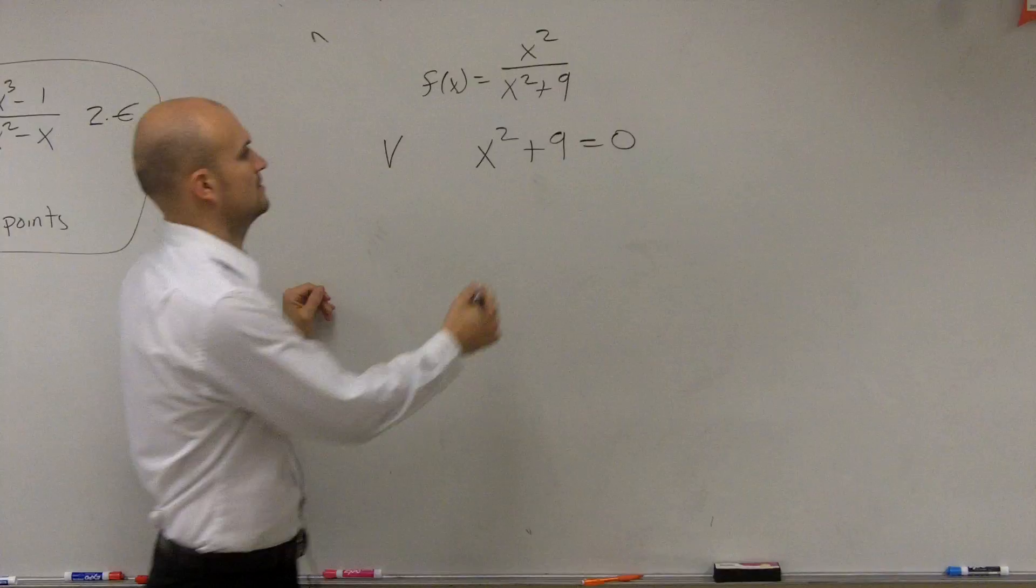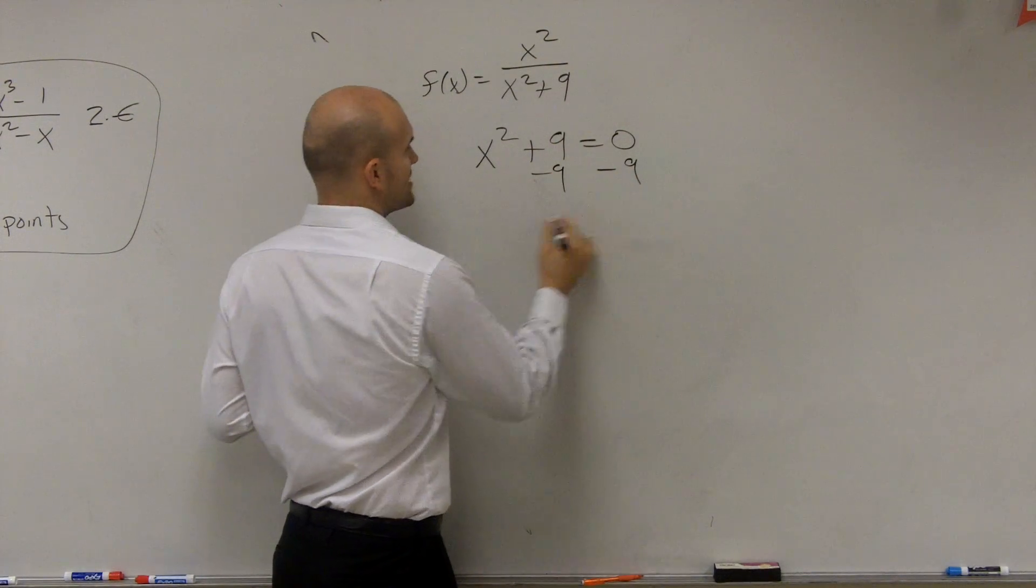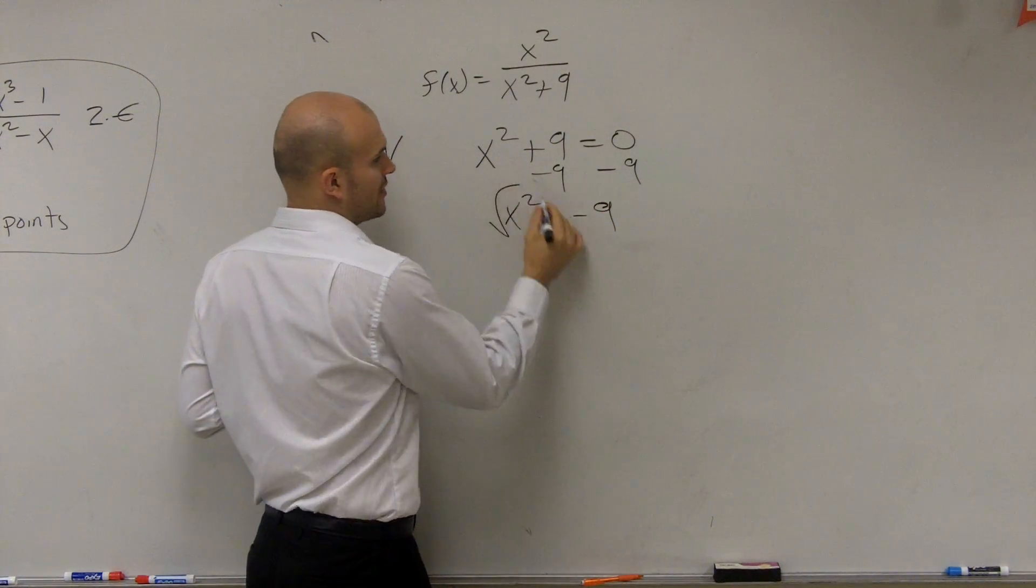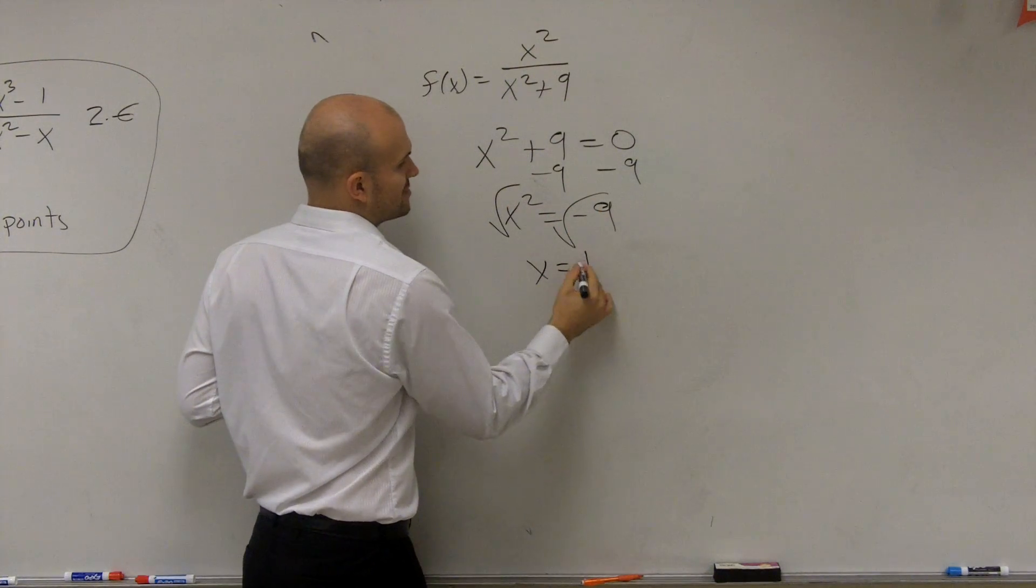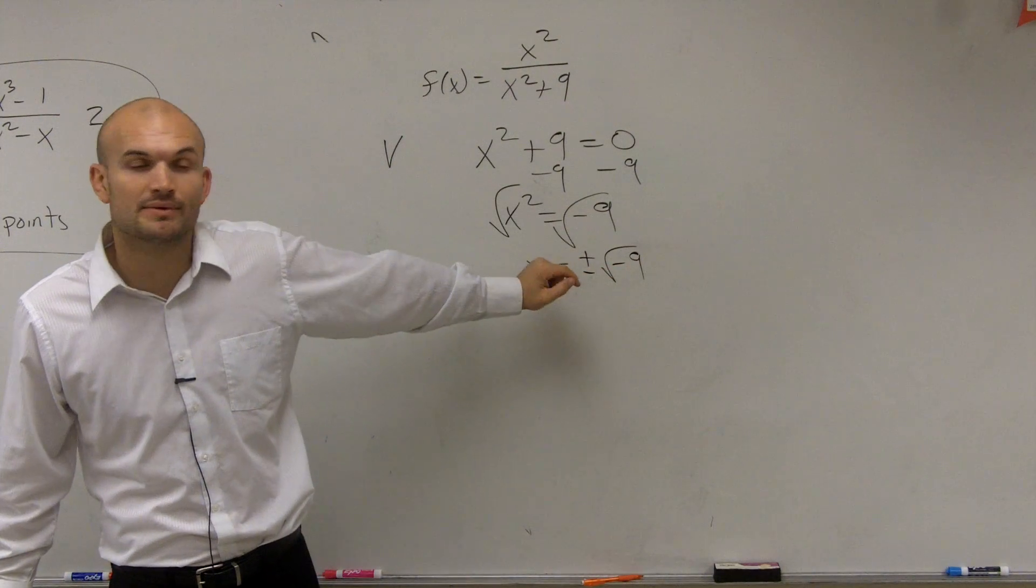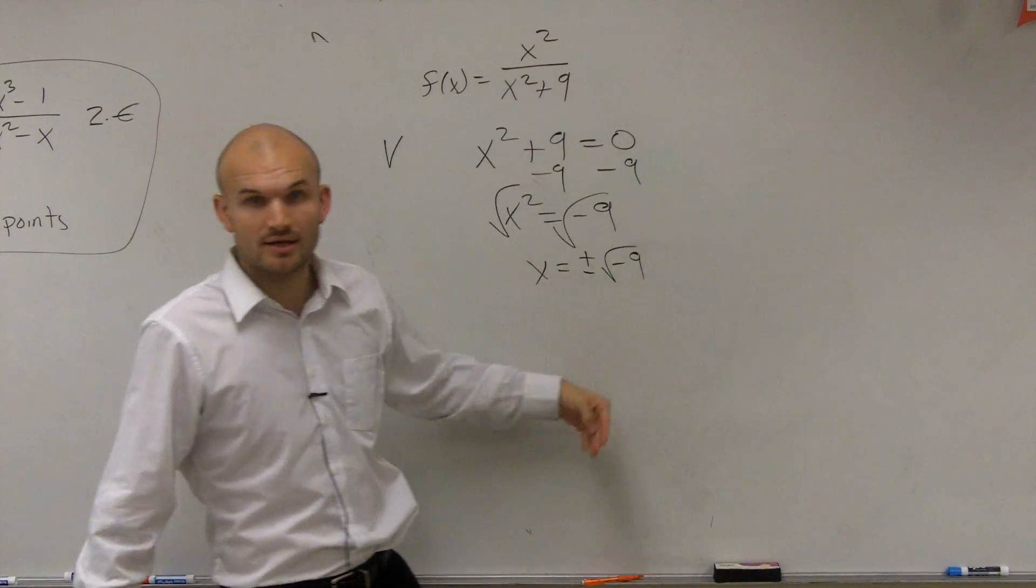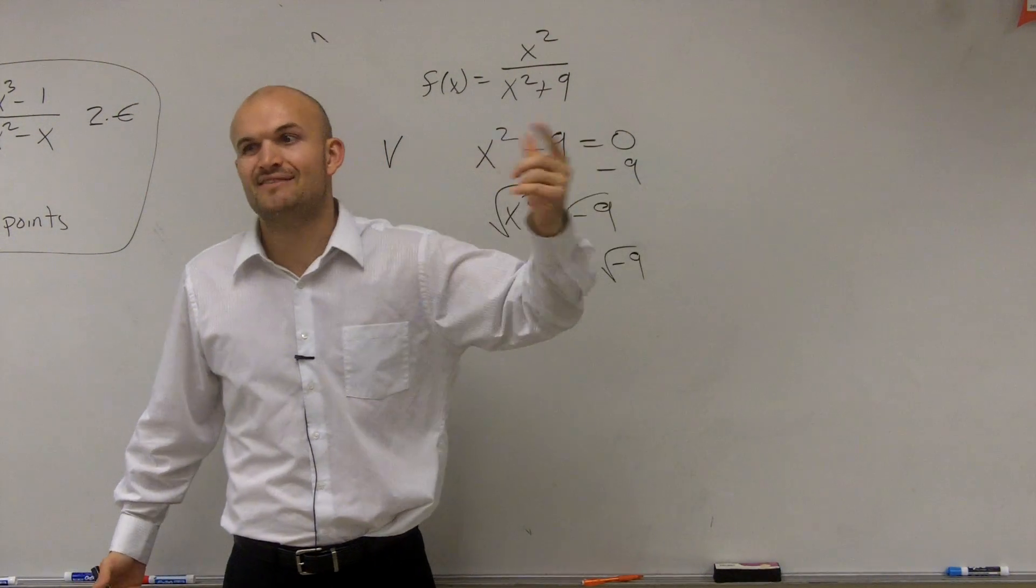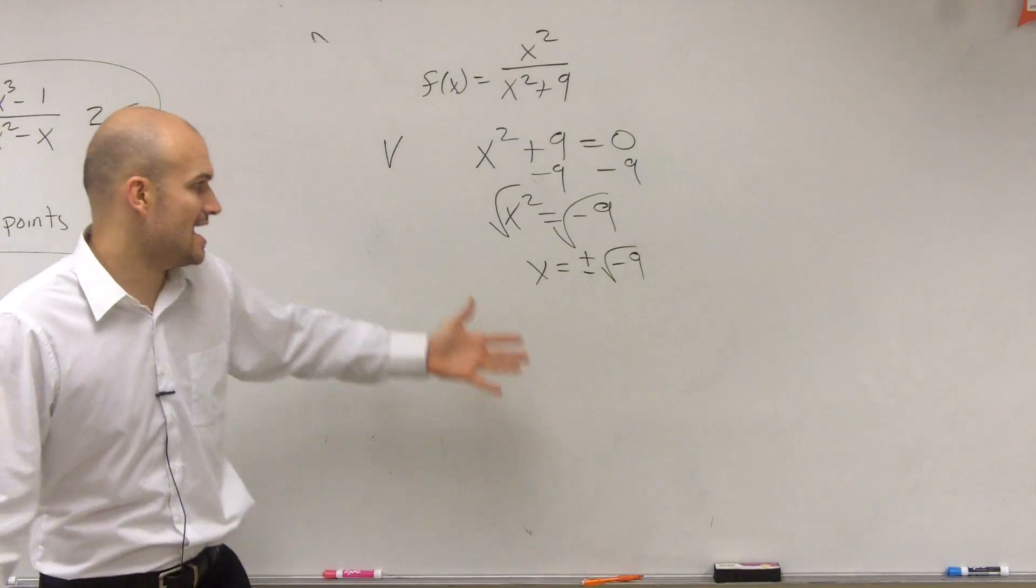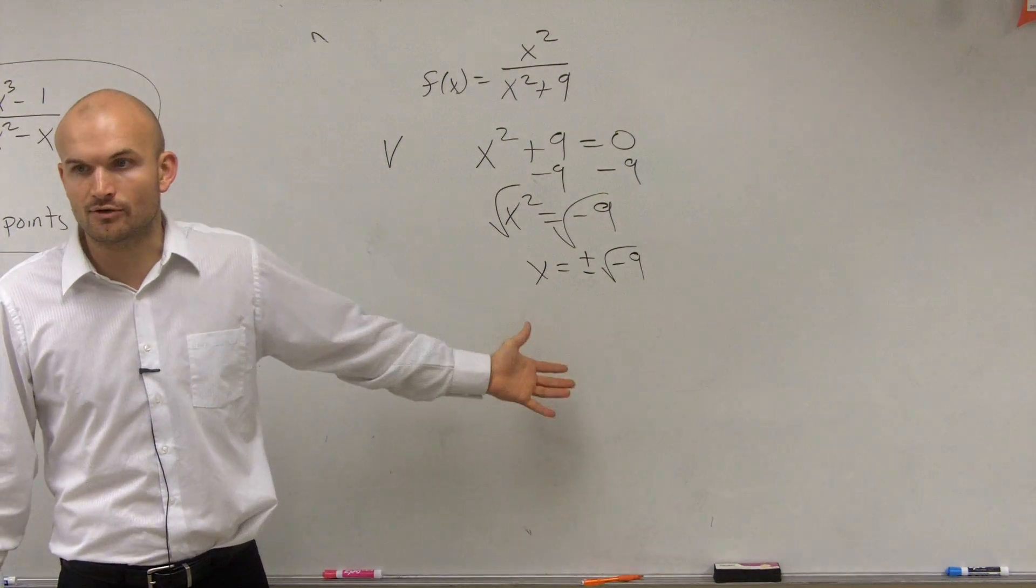Now I solve for x. So we subtract 9 on both sides, x squared equals negative 9. Square root, square root. x equals plus or minus the square root of negative 9. We understand, though, that square root of negative 9, remember that we had the principal square root property. We're going to take out the negative. That means we're going to have i. Remember, i is going to represent imaginary numbers. So do we have a real x-intercept that we could graph? No.